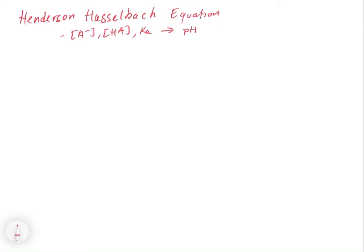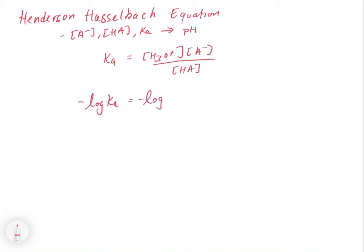Let's take a look at how this is derived. Starting with Ka equal to the concentration of H₃O⁺ times the concentration of A minus over the concentration of HA. We're going to derive this generally, but you can apply it to any acid or base. We're going to take the negative log of both sides — the negative log of Ka, and the negative log of H₃O⁺ times A minus divided by HA.